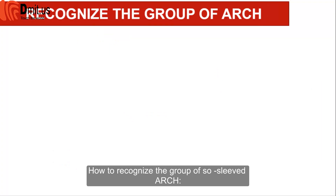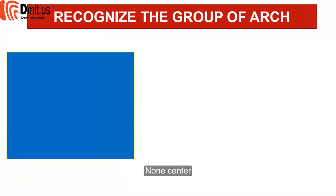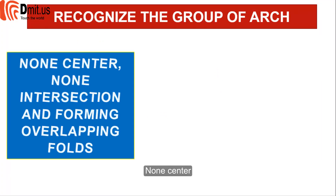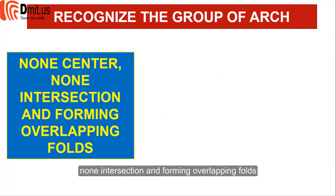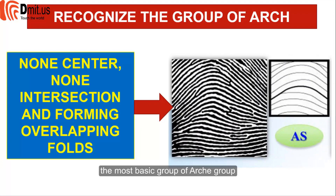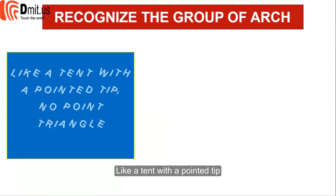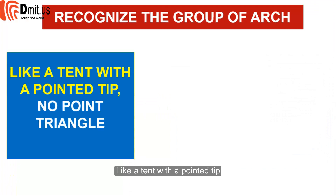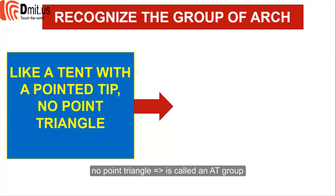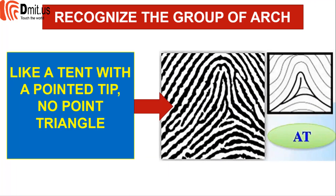How to recognize the Arch Mountain Group: None Center, None Intersection, and forming overlapping folds. This is called AS — the most basic group of the Arch Group. Like a tent with a pointed tip, a pointed triangle shape is called the AT group.